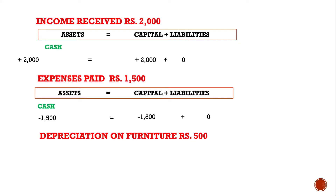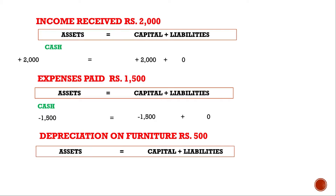Depreciation on furniture: what is depreciation? Depreciation is fall in the value of a fixed asset due to normal wear and tear, efflux of time, or even obsolescence — when a thing becomes outdated. This fall is a loss, and losses are compensated from capital only. So the value of furniture will decrease by 500 and capital will also fall by rupees 500 without affecting liabilities.